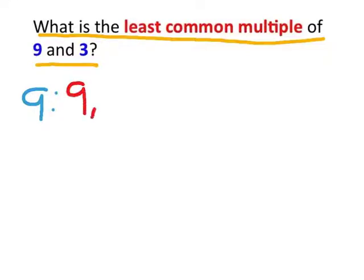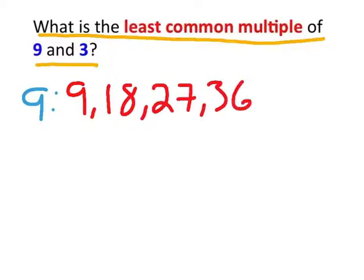What numbers should we have? Well, we would start with 9, then 18, then 27, 36, 45, and 54.